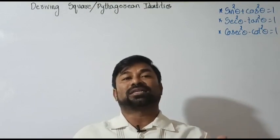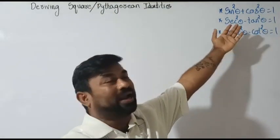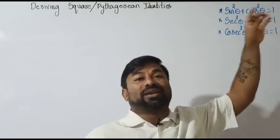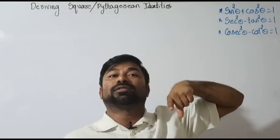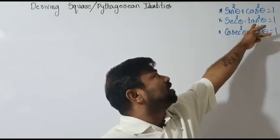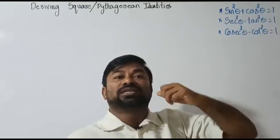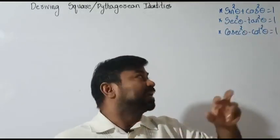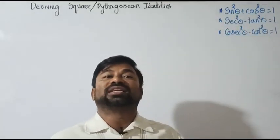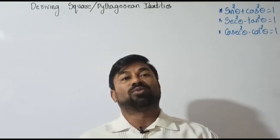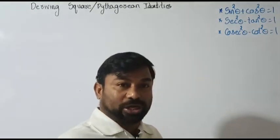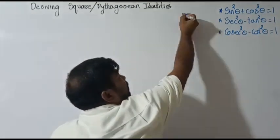The three square identities are: first, sin²θ + cos²θ = 1; second, sec²θ - tan²θ = 1; and third, cosec²θ - cot²θ = 1. These are the three square identities.